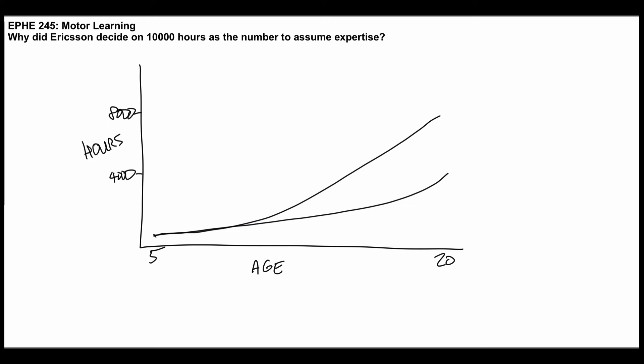Now, his top group, the best piano players in the world and the best violinists, they basically went up, and when they were at age 20, they had done 10,000 hours of practice. And that's where that number comes from—the fact that the best group at age 20 had 10,000 hours of practice.